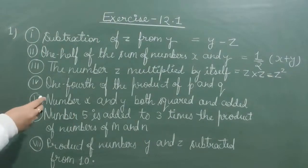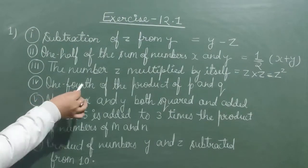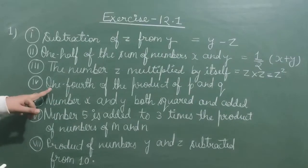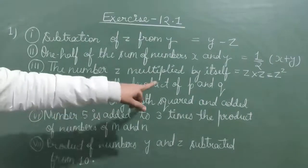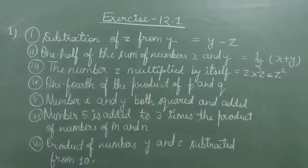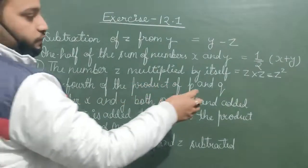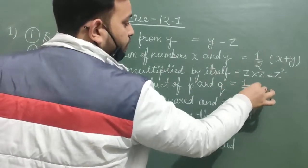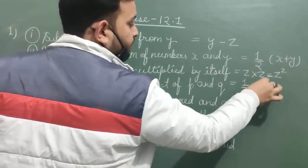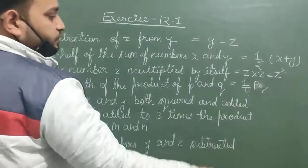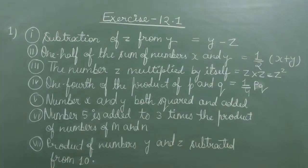Fourth question: one fourth of the product of p and q. One fourth means 1 upon 4. The product of p and q is pq, so the answer is 1 upon 4 multiplied by pq, which we write as 1 upon 4 pq.